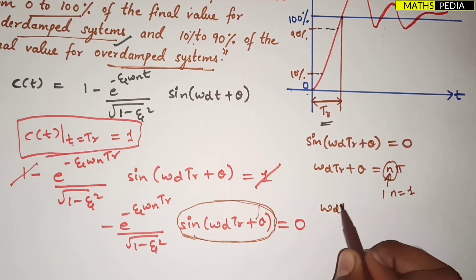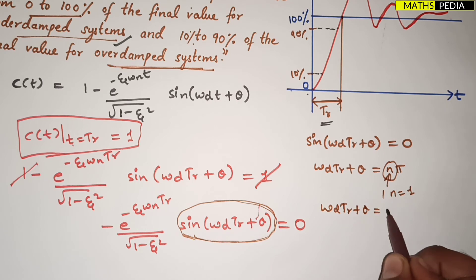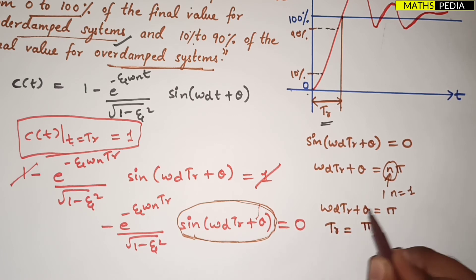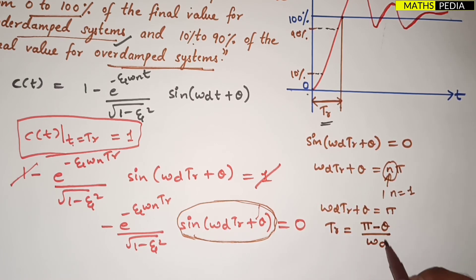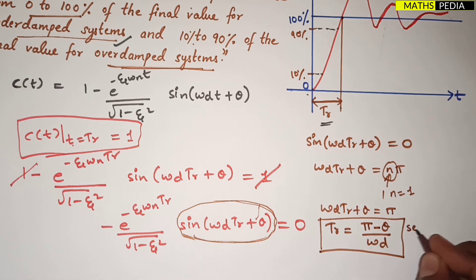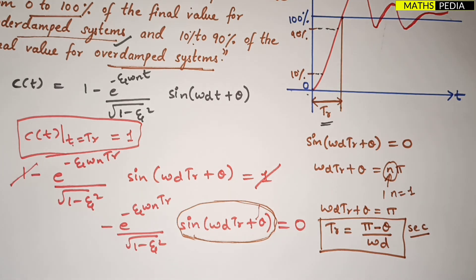With n = 1, we get ωd·T_r + θ = π. Solving for T_r: T_r = (π − θ) / ωd. This is the final answer for rise time of an under-damped second-order system, and the unit is seconds.